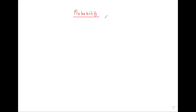A reminder from sets: you know that if you have A united with C complement, what you get is the universal. Suppose you say E is the universal. We also know that A intersecting with its complement gives us the empty set.